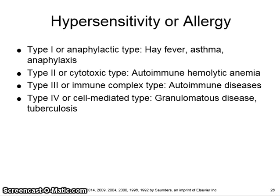Type 1, or anaphylactic type, includes hay fever, asthma, or anaphylaxis. Type 2, or cytotoxic type, includes autoimmune hemolytic anemia. Type 3, or immune complex type, includes autoimmune diseases. And Type 4, or cell-mediated type, includes granulomatous disease and tuberculosis.